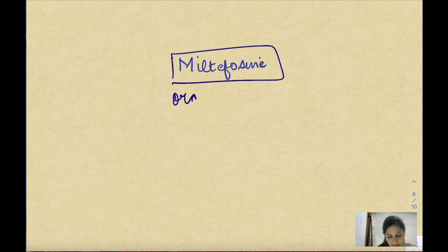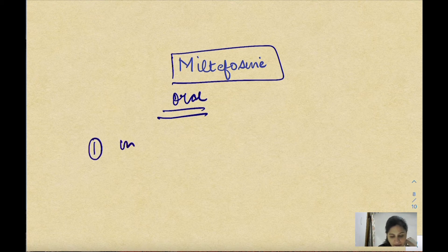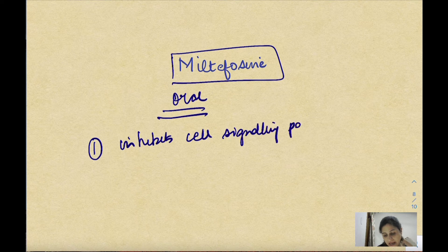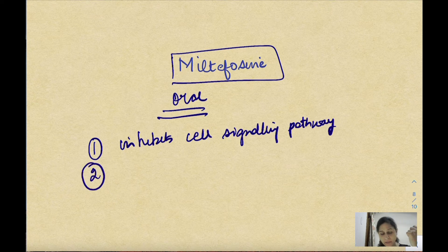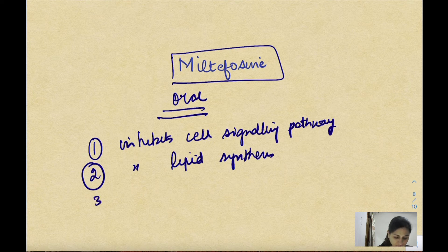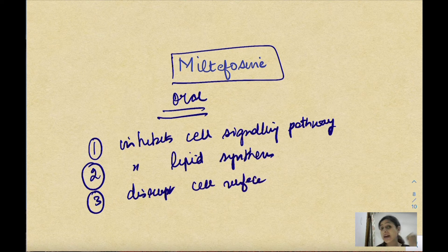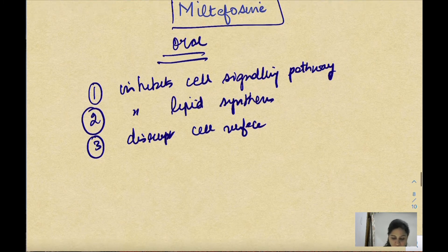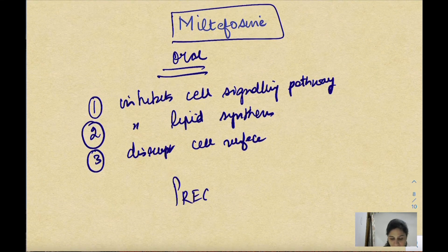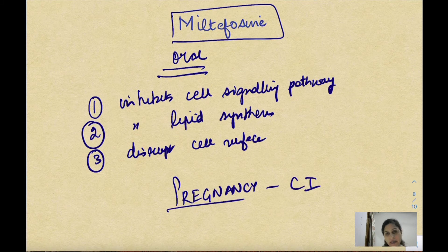Miltefosine is the only and first oral drug available for leishmaniasis. It inhibits cell signaling pathways and especially disrupts lipid synthesis inside the leishmania, also disrupting the cell surface. The key contraindication to miltefosine is pregnancy — it is a teratogenic drug and is absolutely contraindicated in pregnancy.